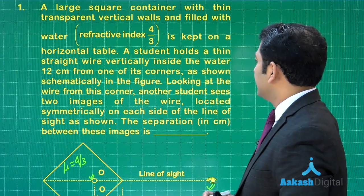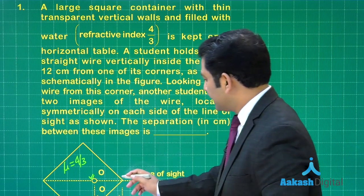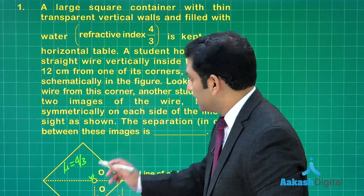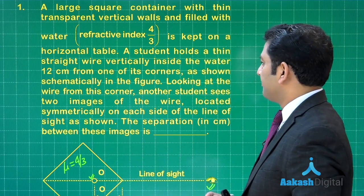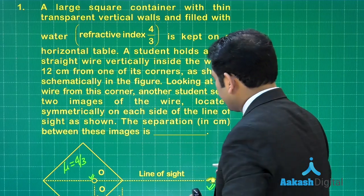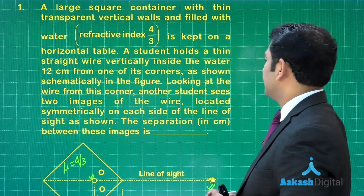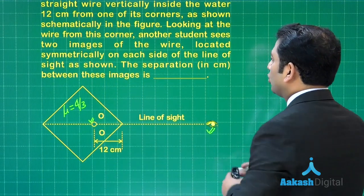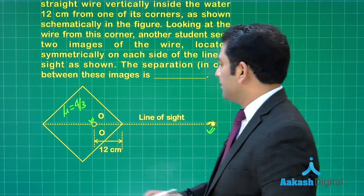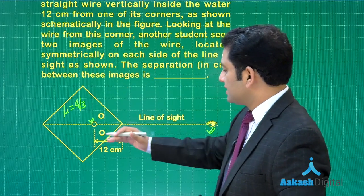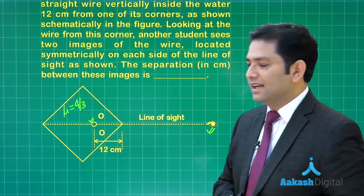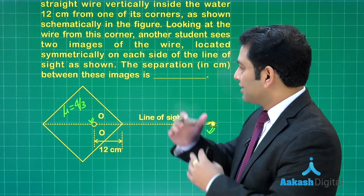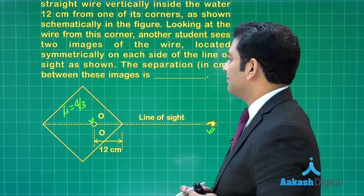The wire is 12 centimeters from one corner. Looking from this particular corner, another student sees two images of the wire. Why would two images be seen? Because of refraction through one phase and through the other phase.